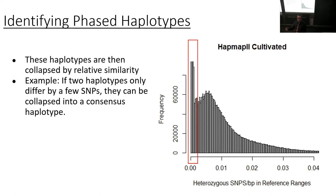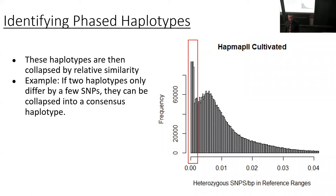To simplify the search space, we will collapse some of these haplotypes based on similarity. If some of them only vary by a SNP or two or some small amount of variation, they'll be collapsed to a consensus haplotype.